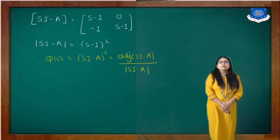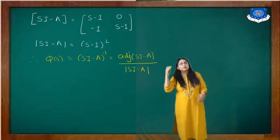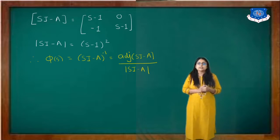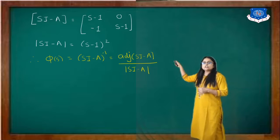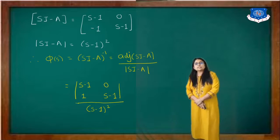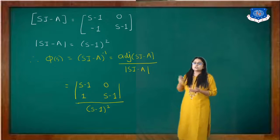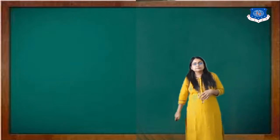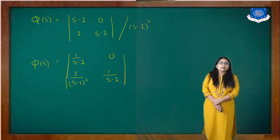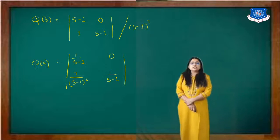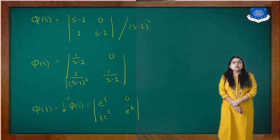We want to find the adjoint of (sI minus A), since (sI minus A)^(-1) equals adjoint(sI minus A) divided by |sI minus A|. For a 2×2 matrix we interchange the diagonal elements and change the sign of the off-diagonal elements. So the adjoint is [[s-1, 1],[0, s-1]]. Separating the denominator, phi(s) equals [[1/(s-1), 1/(s-1)^2],[0, 1/(s-1)]].